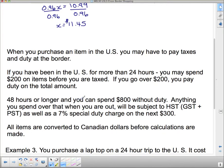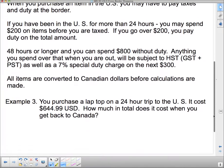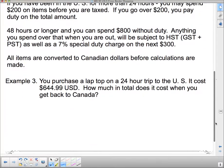48 hours or longer, you can spend $800 without duty. Anything you spend over that when you are out will be subject to HST, GST, and PST, as well as 7% special duty charge on the next $300. All items are converted to Canadian dollars before calculations are made. So, there's this rather strange, well, not really strange, but a little bit complicated way that they decide how much duty you owe the Canadian government when you come back across the border. We'll sort of simplify that a little bit.